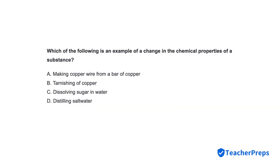Which of the following is an example of a change in the chemical properties of a substance? Correct response is letter B: Tarnishing of copper.